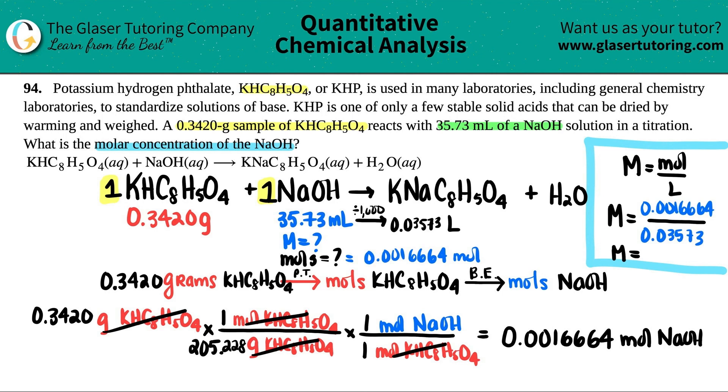And now we can figure it out. 0.0016664 divided by 0.03573. If I need sig figs, I see that I have four sig figs here, four sig figs here. So I need four sig figs. 0.04664. So that's the molarity of the NaOH solution that we needed. And there you go.